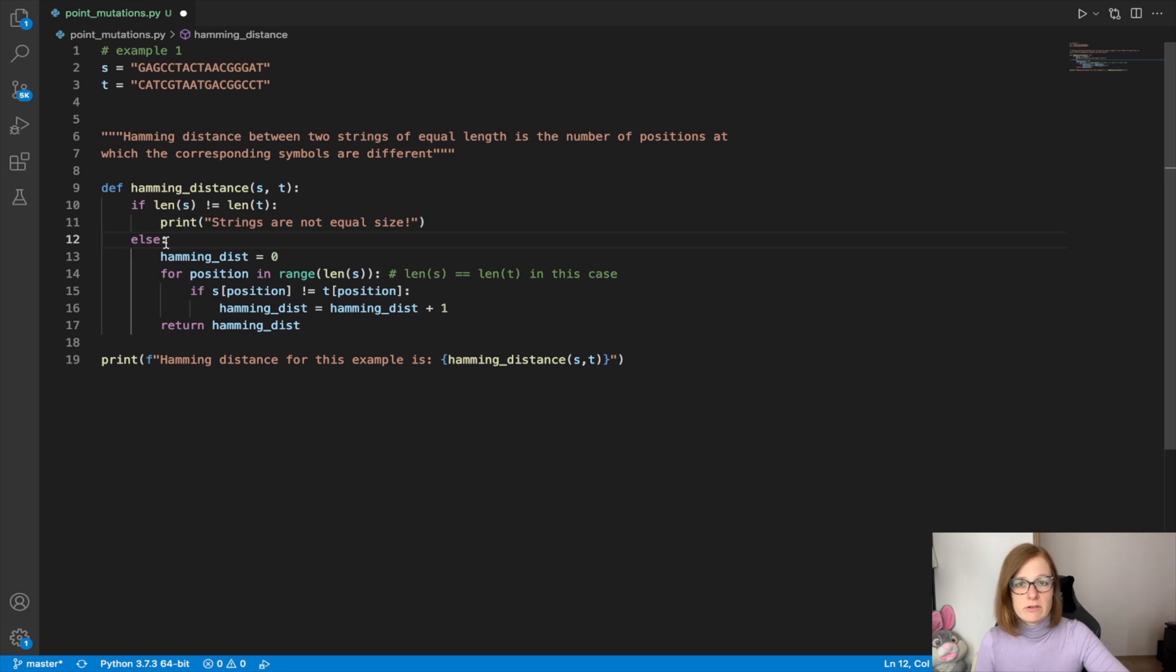Else, meaning if the strings are actually equal sizes we can calculate the Hamming distance. We start by defining the variable called hamdist which will keep a track of our count. And by count I mean the number of point mutations.